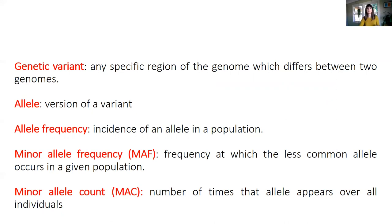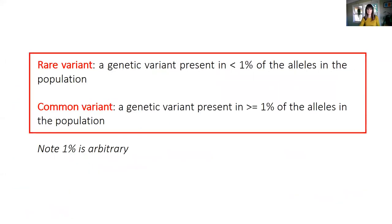So we are talking about percentages and numbers to describe the same thing. Generally speaking, we will be talking about common variants when a genetic variant is present in roughly 1% or more of the alleles in the population, and all those that have a lower frequency will be called rare variants. This is something arbitrary, so this percentage used as a threshold can change.